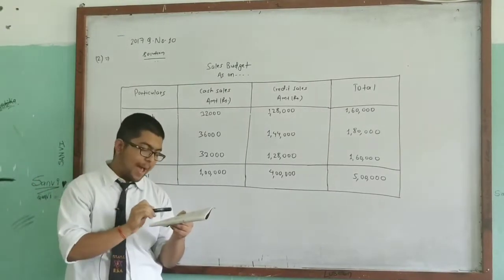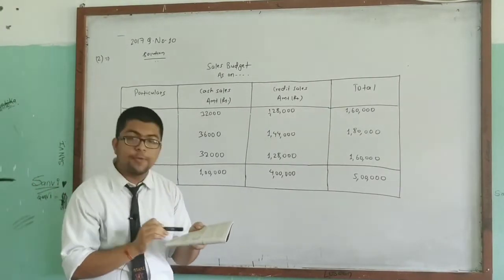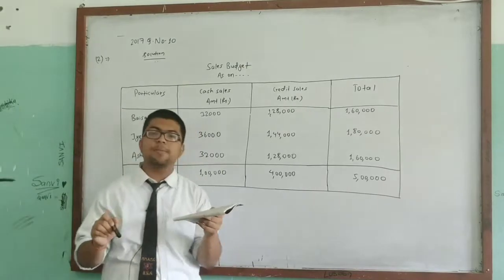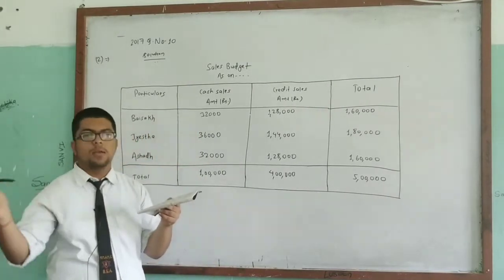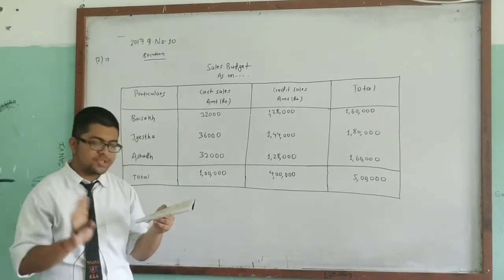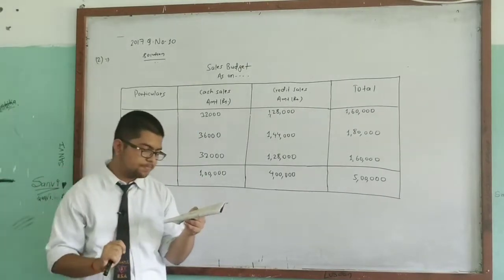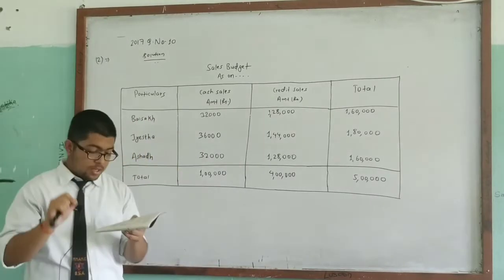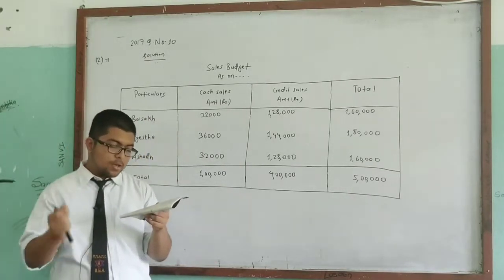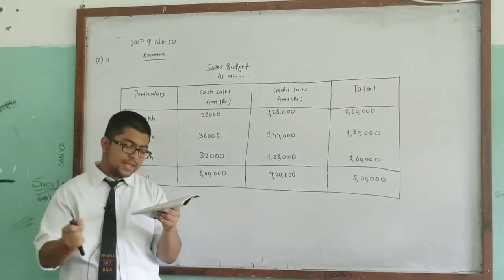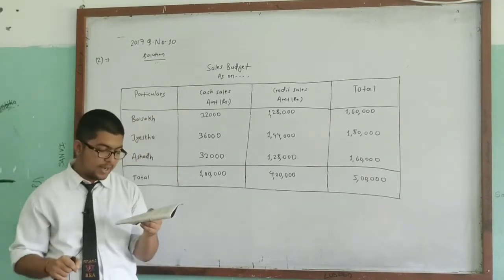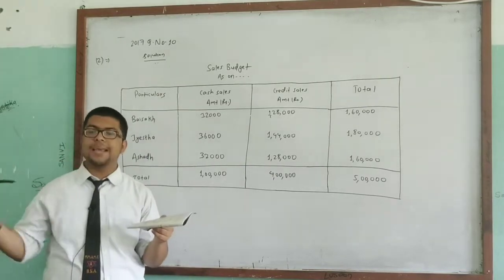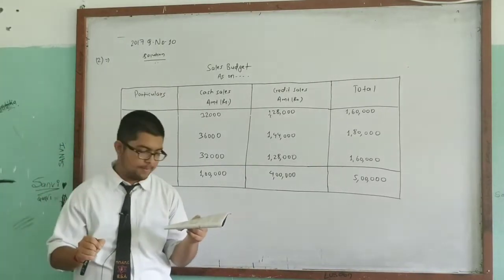17% is Faagun, 15% is Chaitra, 16% is Baisakh. This is the given data. 20% is cash sales and 80% is credit sales.